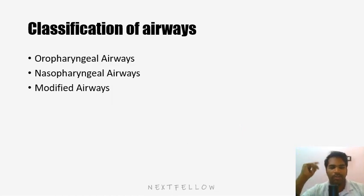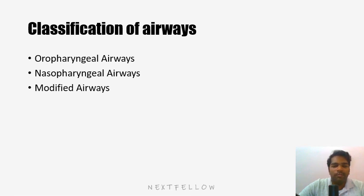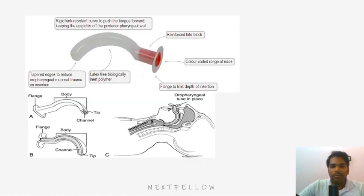Classification of airways: there are oropharyngeal airways, which are inserted through the mouth, and nasopharyngeal airways, inserted through the nose. There are also modified airways — oropharyngeal and nasopharyngeal designs that have been modified slightly. The airway goes either through the nose or through the mouth to reach the pharynx.